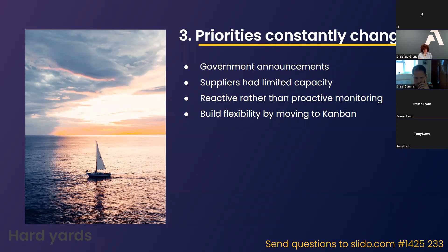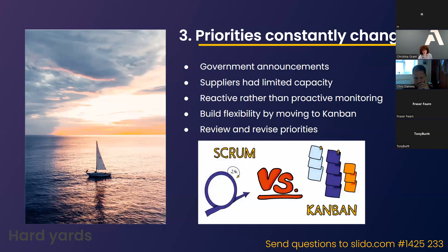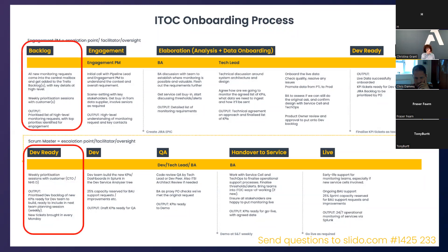They reviewed priorities at least weekly, at two key points in the end-to-end process. They kept sprint ceremonies because they were helpful for team dynamics — stand-ups, fortnightly retrospectives, weekly show-and-tells. New tickets were brought into the dev team on Mondays so they had a view of the week's work, but could pivot when needed. The recommendation: if you need flex in your process, weigh up when you need to move from Scrum to Kanban.